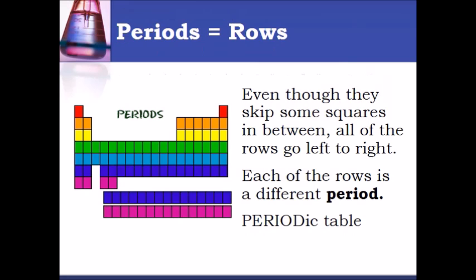In a periodic table the rows are called periods. Sometimes they skip squares like if you look at the red row across the top there's a whole bunch of squares that are missing. There's only the two red elements in the top row and there's the eight orange elements in this next row.